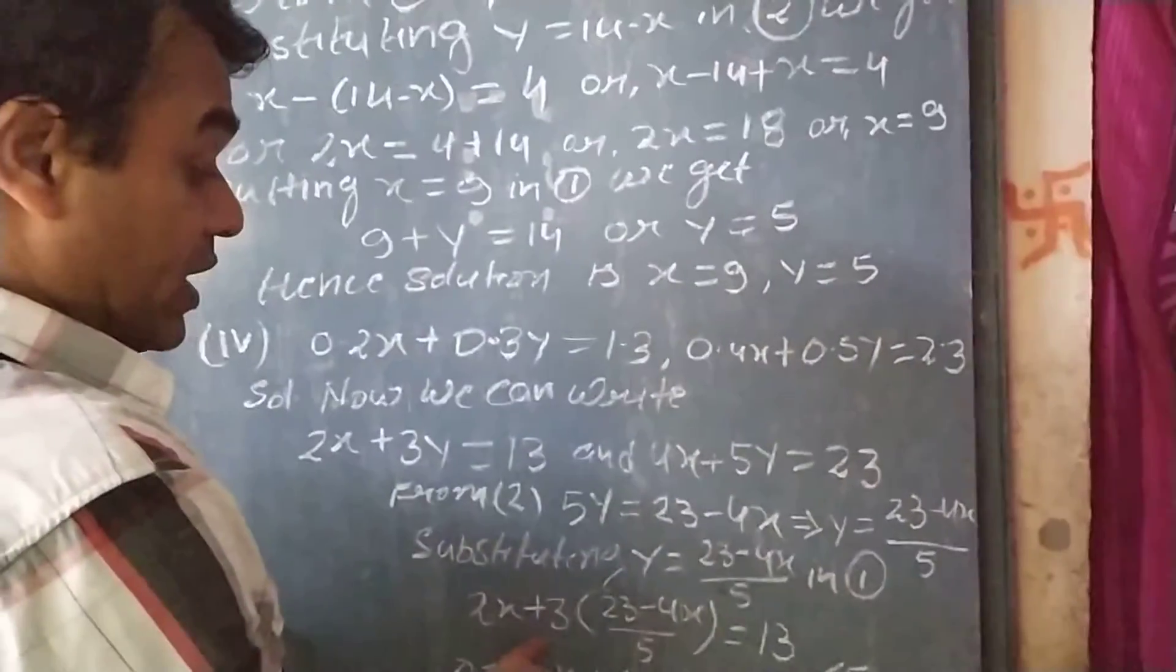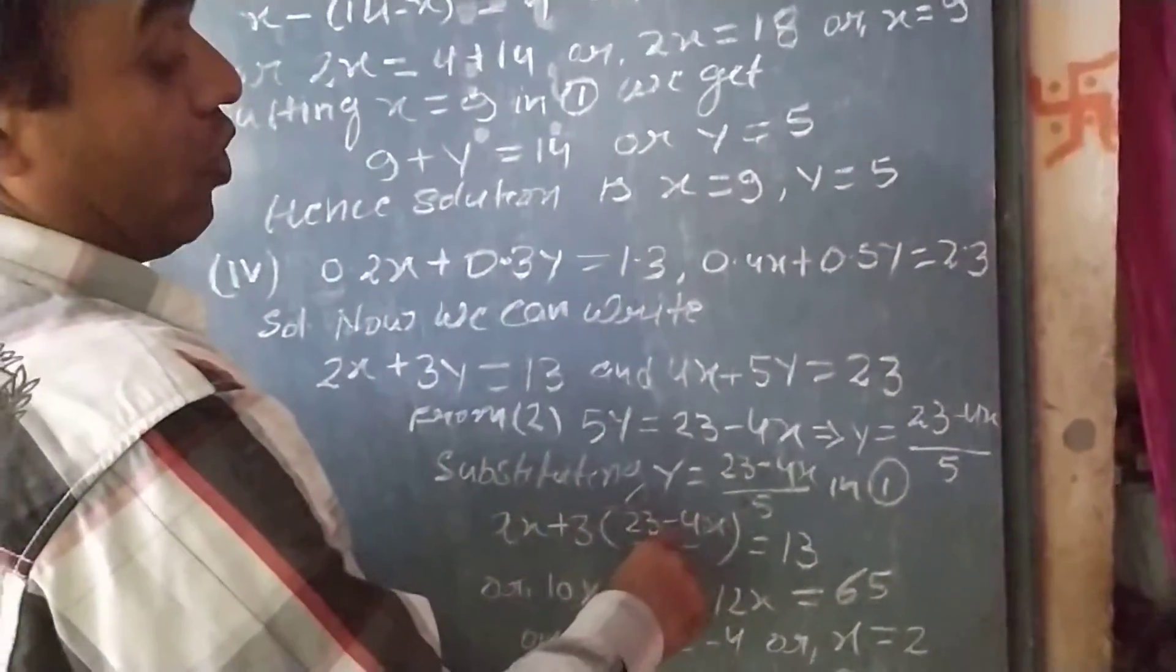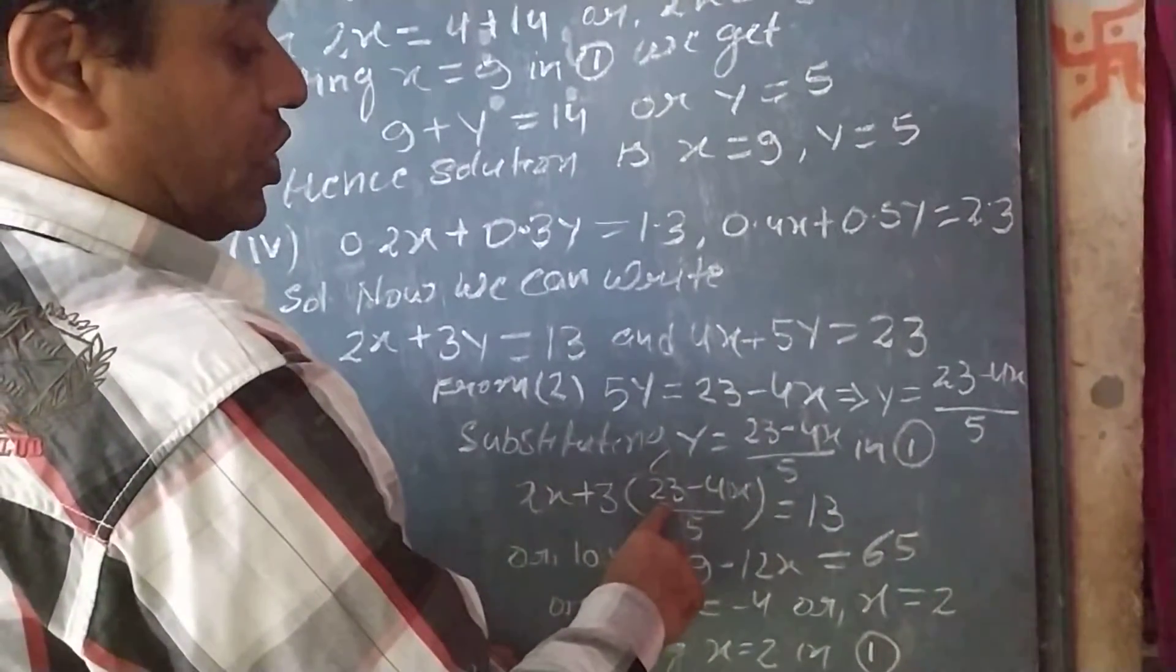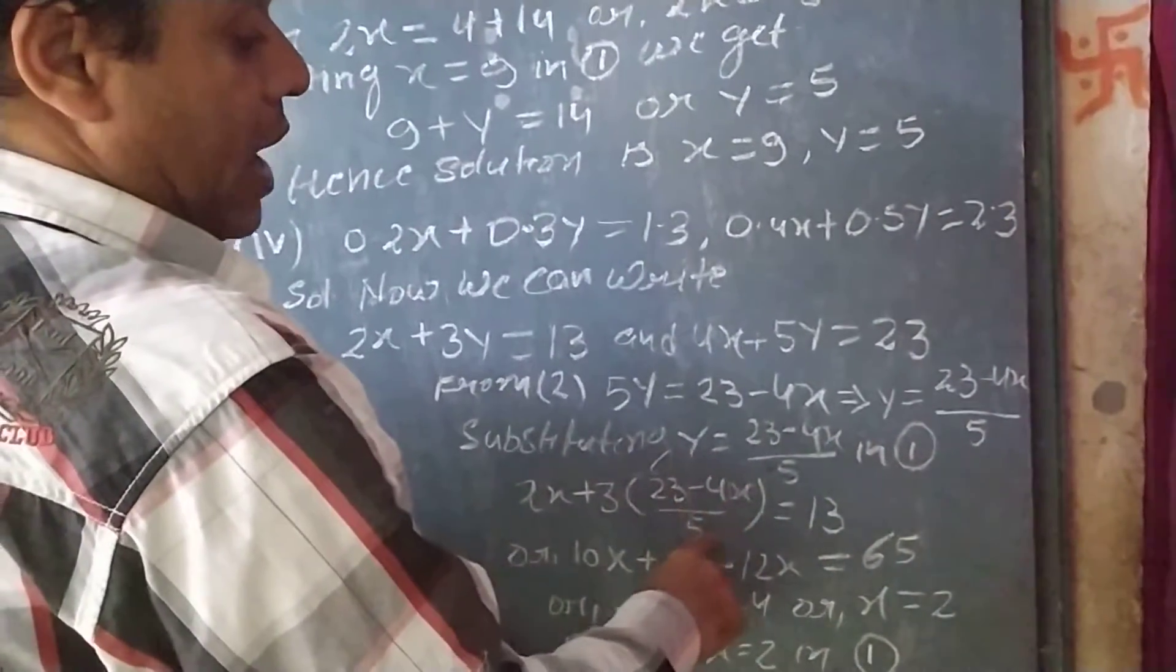So, 2x plus 3, that is, value of y we have put from equation 2, that (23 minus 4x) by 5 equal to 13.